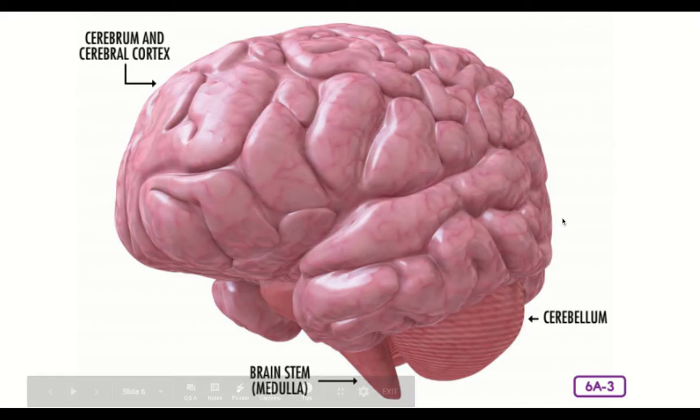Your brain stem, about as thick as your thumb, is approximately three inches long. It helps to relay messages between your brain and spinal cord. The bottom third of your brain stem, the part that blends into the top of your spinal cord, is called the medulla.